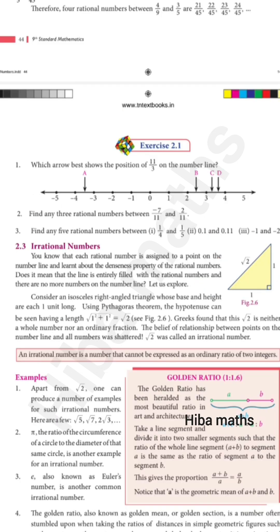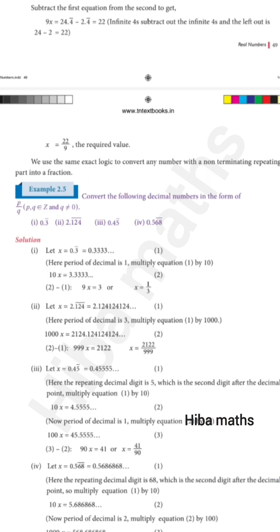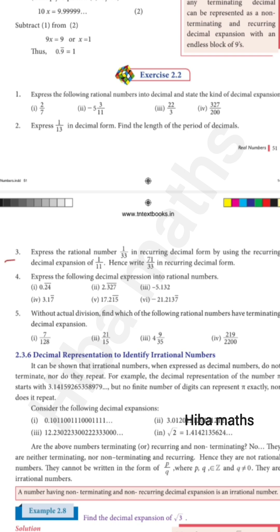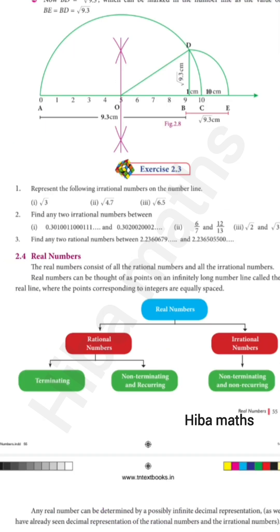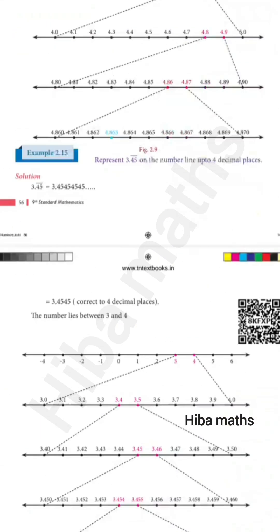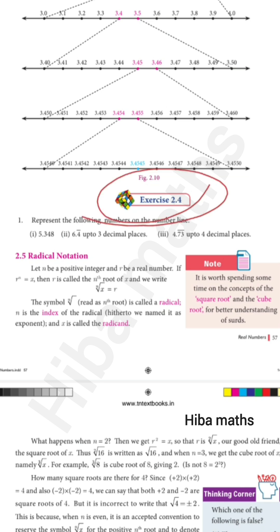Exercise 2.1: The second question is covered. You can choose the second question and get the third question. Example 2.5 is repeated. Exercise 2.2 is completed — the third, fourth, and fifth questions are important. The fifth question involves ratio numbers. There are two examples. Exercise 2.4 is complete with examples.